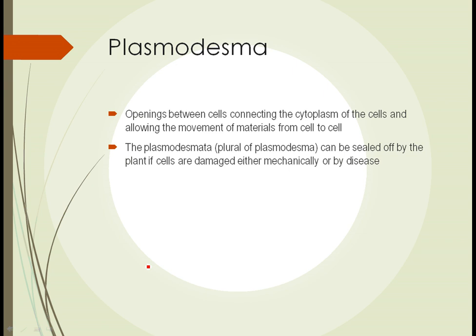Plasmodesmata can be sealed off by a plant cell if the cell is damaged, either mechanically — such as something chewing on it or hedge shears cutting a cell — or by disease. If the cells didn't have a way to close that opening, the cytoplasm from adjacent cells would all leak out, the cells would die, and eventually the plant would die. So plants do have a mechanism for closing plasmodesmata off.